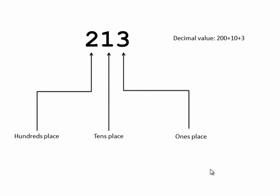Here's an example decimal number: 213. We can work with numbers as large as 213 or even larger by the use of different place values such as the 1's place, the 10's place, and the 100's place. We're not stuck with only the numbers 0 through 9. By using the 10's place we can add in at least another 10, and by using the 100's place we're adding in another 200. So we have 200 plus 10 plus 3 for a total of 213.